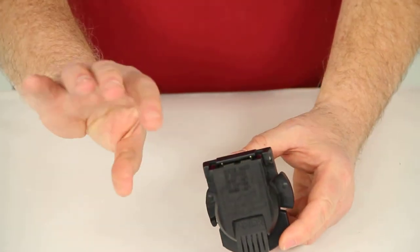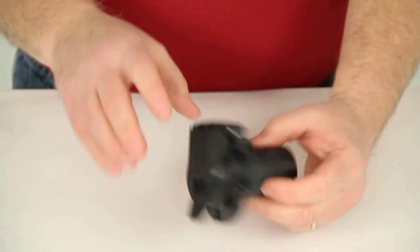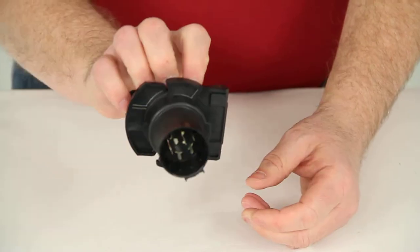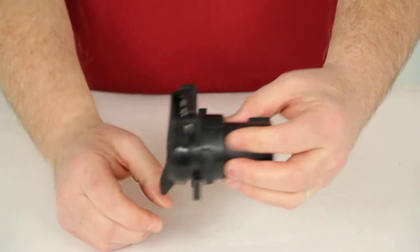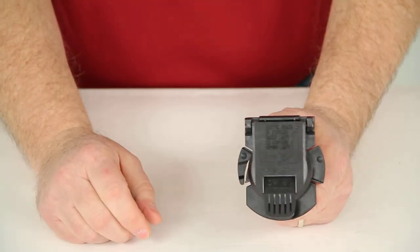When you install this, you remove that cap off your bumper, put this in, lock it into place, take your harness that is on your truck and plug it into the back here. You have a working seven-way on your truck.